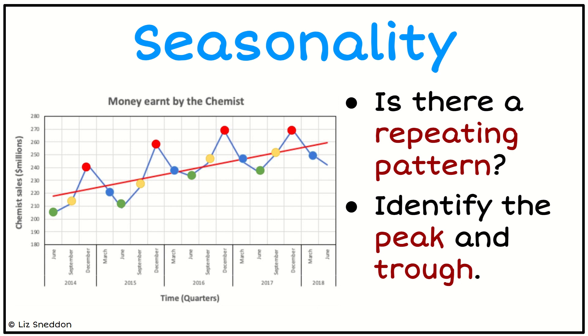We'll also notice that the green dots each year, if I look at one year at a time, the green dots seem to be the lowest. So I want to see does that pattern of going high at this time, low at that time, high, low, does that pattern repeat itself? And if it does, I want to identify, well, when is the highest point, the peak, and when is the lowest point, the trough?